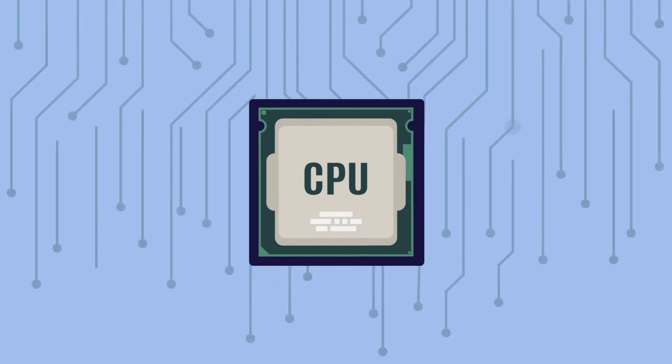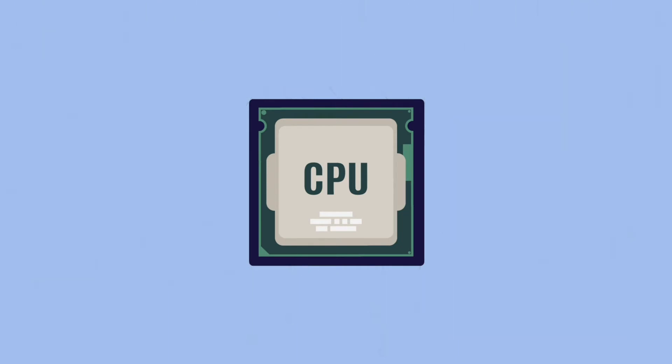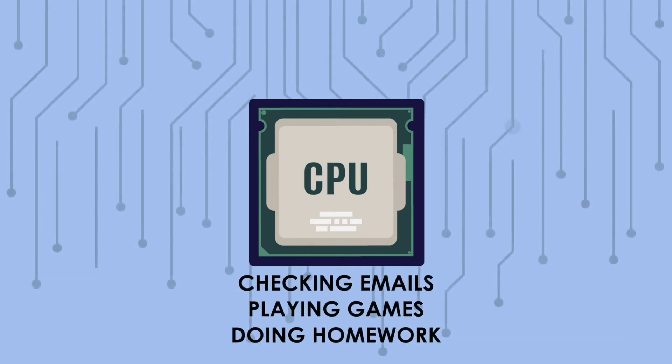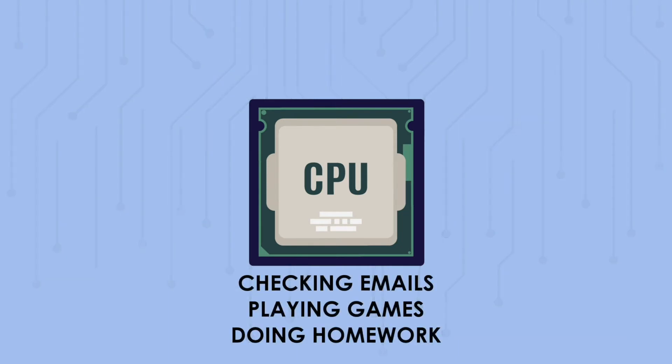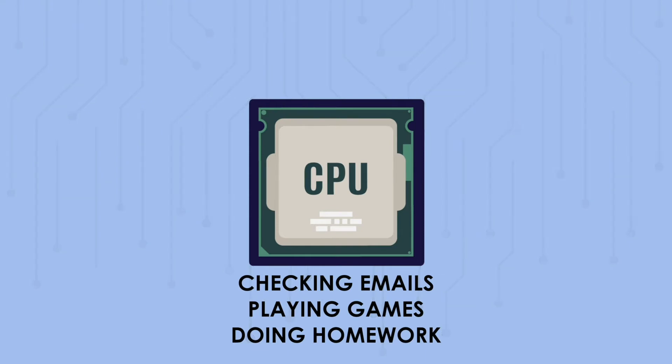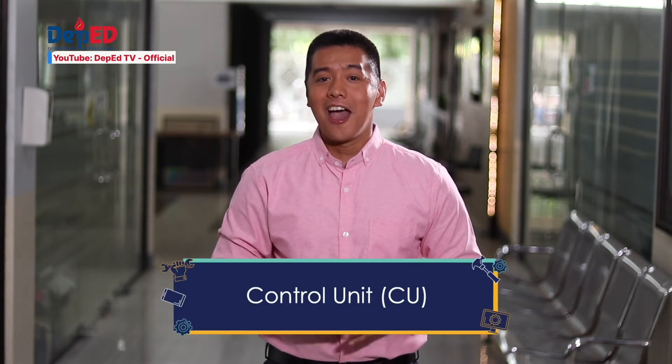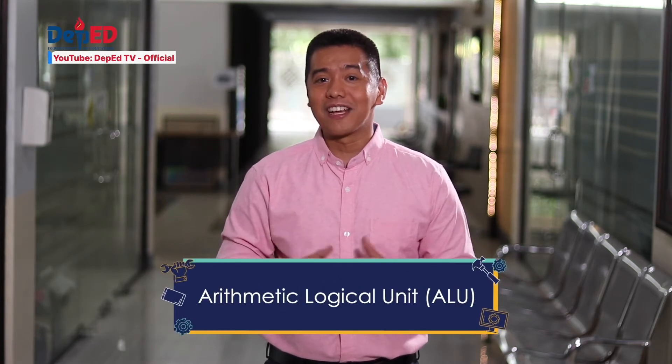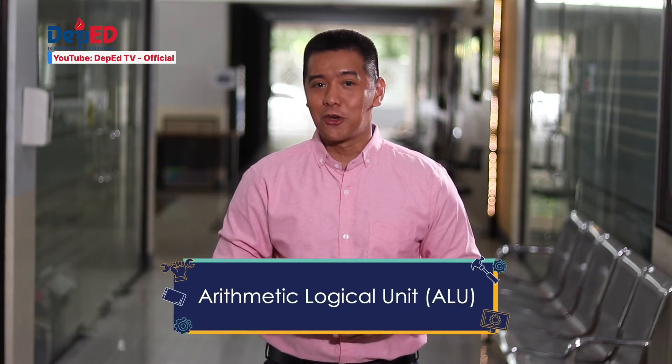Whatever is done in our computers — such as checking emails, playing games, and doing homework — it is the CPU that processes the data we use. Under the central processing unit, we have two essential units: the control unit or CU, and the arithmetic logic unit or ALU.